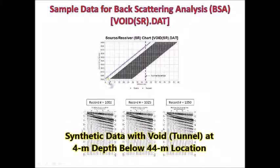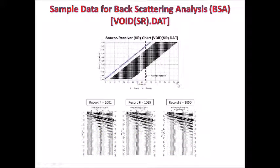It has total 50 records of 24-channel acquisition for each record, and it is basically roll-along acquisition. And this line indicates the location of that modeled subsurface void or tunnel. It was located at this 44-meter location along the survey line.